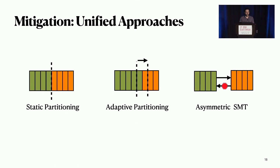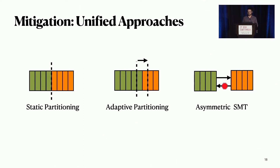So what can we do to mitigate this information leakage? One approach is to mitigate these one by one — one mitigation for caches, another for TLB, another for branch predictors — but this approach does not scale well. What we were looking for was a unified approach that you can apply to all of these resources, maybe with some small variation.